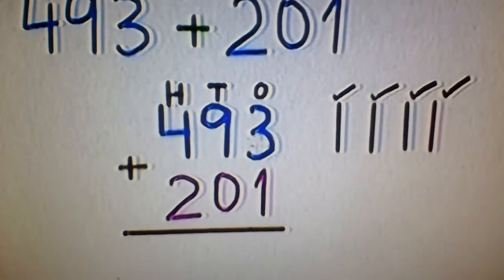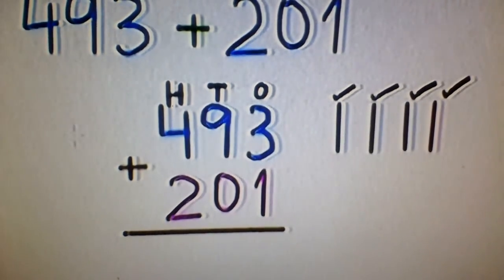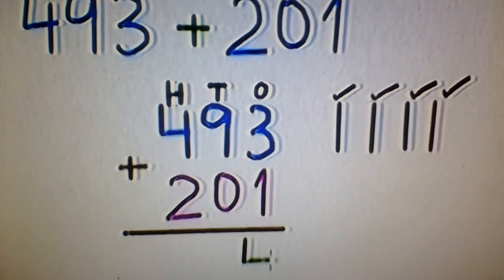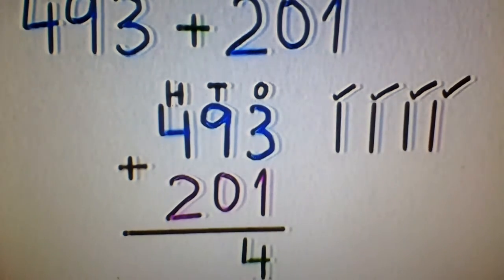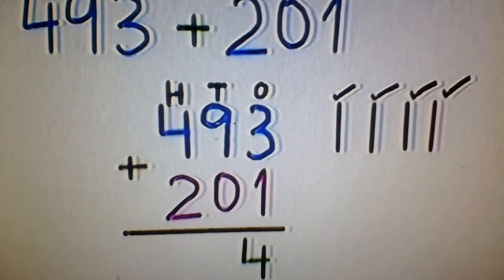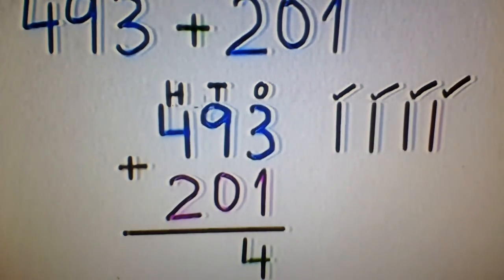What will be four lines? What will be three plus one? Four. We have done one's digits. Now we will add ten's digits. We will add nine and six.